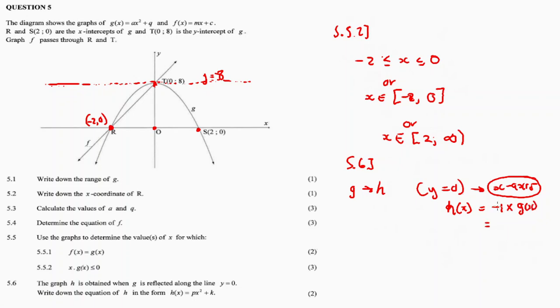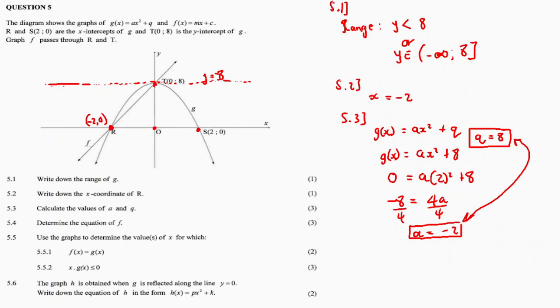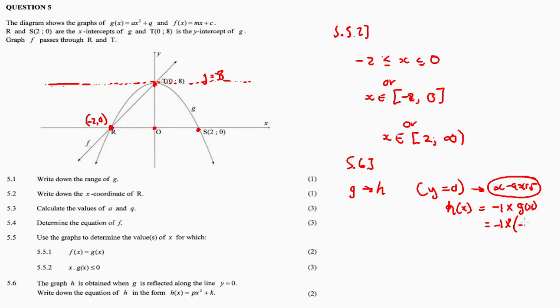Hence, multiply the function G by negative. It's negative one times g of x. a is negative 2, q is 8. So it's negative times (-2x² + 8). Let's simplify: it's positive 2x² minus 8. Therefore, this is H of x, which is a reflection of G. This is function H. This concludes our recording.